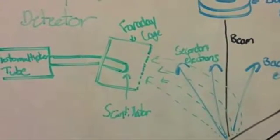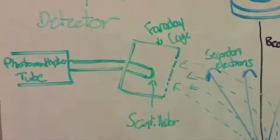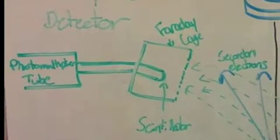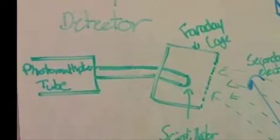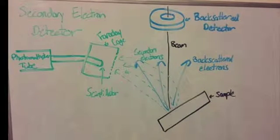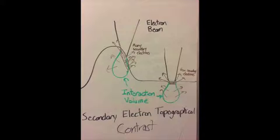Once they pass through the cage, the electrons hit the scintillator, which emits light after the electrons hit it, and this light is sent up the photomultiplier tube to be amplified and then recorded. The amount of electrons that hit the detector correlates to the brightness of that pixel, and that gives a topographical contrast.